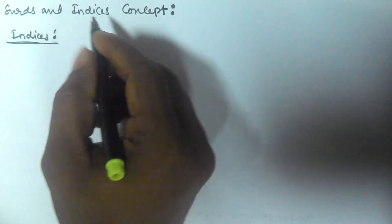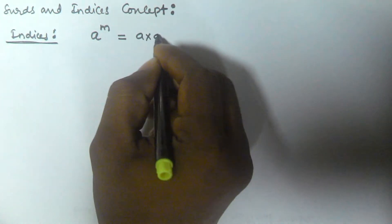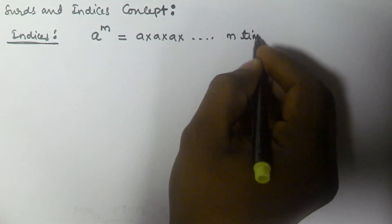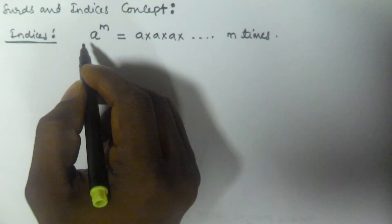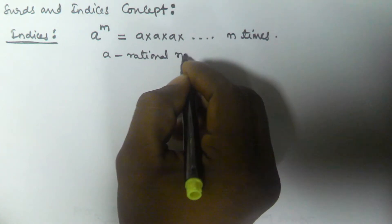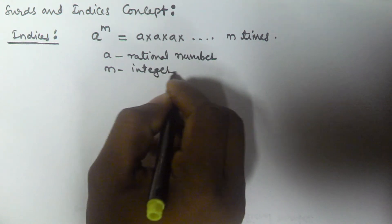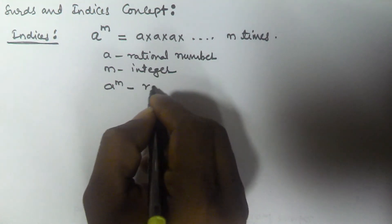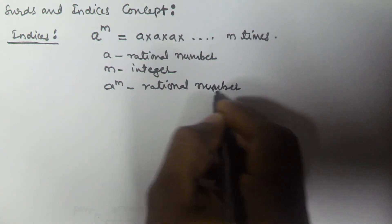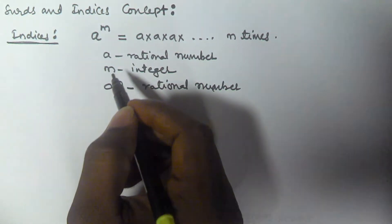If a given number is in the form of a to the power of m, then a to the power of m is equal to a into a into a, m times. So if the given number is in the form of a to the power of m, where a is a rational number and m is an integer, and a to the power of m is a rational number, then this number is called an index.